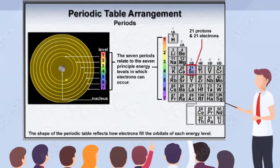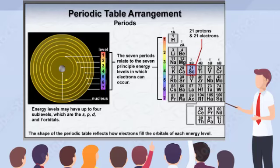The shape of the periodic table reflects how these electrons fill the energy levels, and the four types of energy sublevels, known as the S, P, D, and F orbitals. You will learn more about how electrons fill various types and numbers of orbitals, and how these relate to the seven periods in the next scenes.